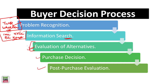Then you start evaluating alternatives. You have maybe 3 alternatives — Bajaj CT100, Hero Splendor, and others. You evaluate average mileage, price, quality — whose price is better, whose quality is better. Then eventually you make the decision: I'll go with Bajaj. It's great, everybody buys that, I'll buy it as well.